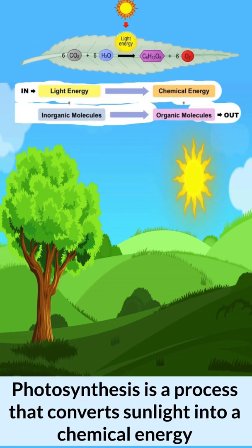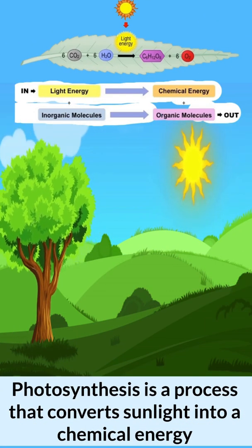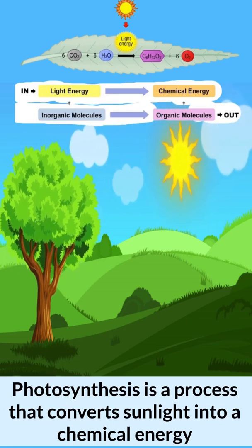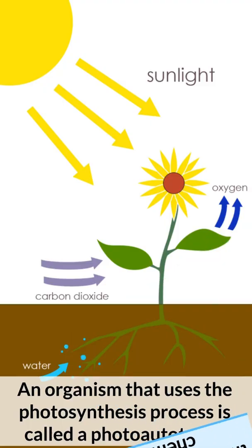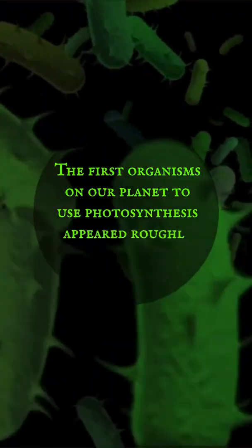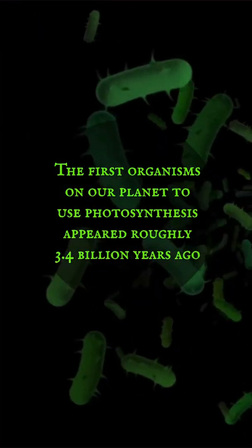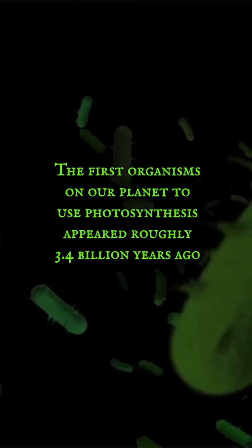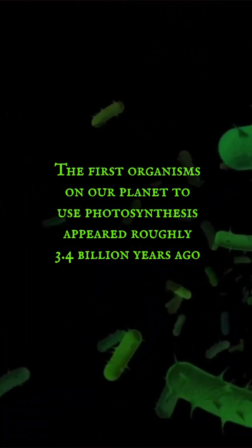1. Photosynthesis is a process that converts sunlight into chemical energy. 2. An organism that uses the photosynthesis process is called a photoautotroph. 3. The first organisms on our planet to use photosynthesis appeared roughly 3.4 billion years ago.